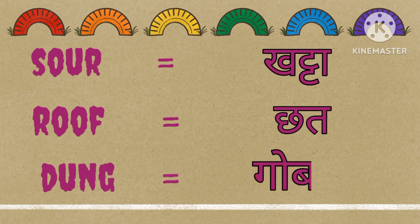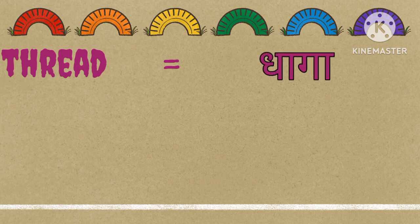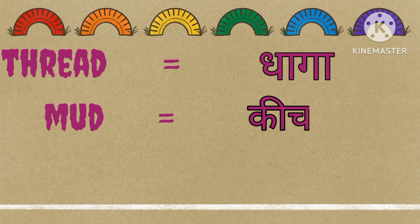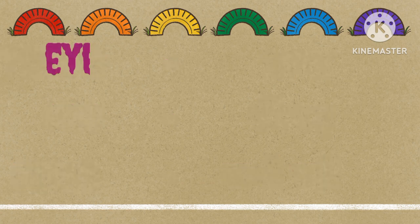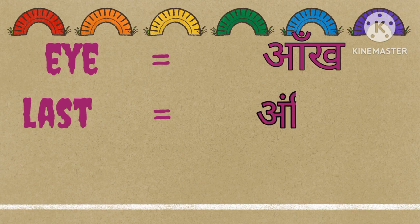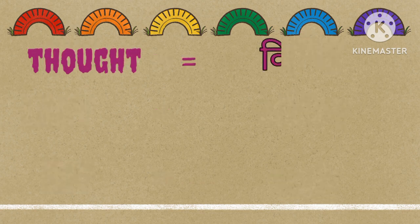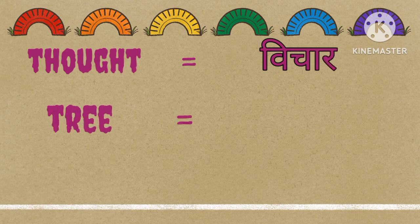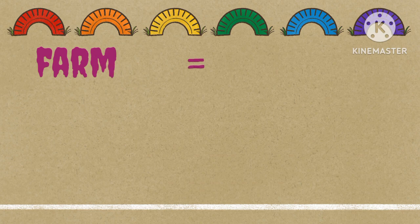Dung: Kogar. Thread: Dhaazah. Mud: Keechard. Never: Kabhi nahi. Eye: Aankh. Last: Aankhri. Let: Chalo. Thought: Vichar. Tree: Paid. Cross: Par karna. Palm: Kheat.